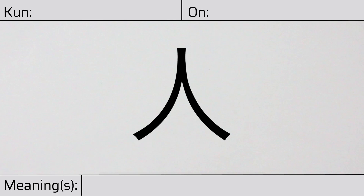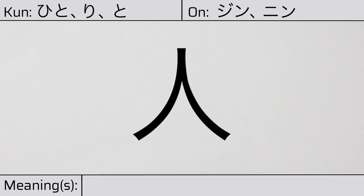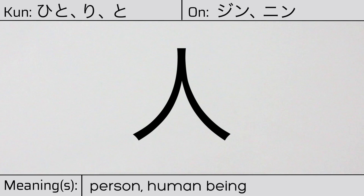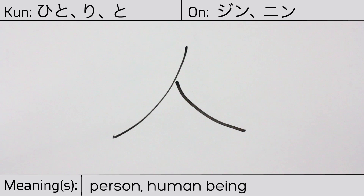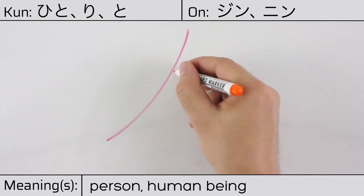Welcome to this lesson on Japanese kanji. Today, we'll be discussing this character. This kanji has kunyomi or Japanese readings of hito, ri, or to, and it has onyomi or Chinese readings of jin or nin. This character has the meanings person or human being. Here is the stroke order. This character has no radicals, but is itself a radical in many other composite kanji.